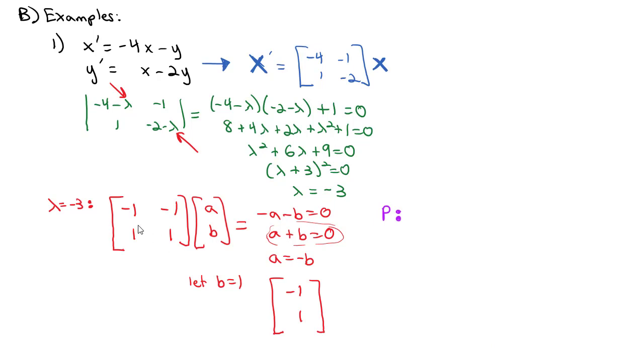Now we're going to look for our p vector. The way we find it is we take that same matrix, negative 1, negative 1, 1, 1, and multiply it by another vector. I'll call them m, n. That's my p vector. I'm going to set that equal to not 0, but equal to the eigenvector that I just found, negative 1, 1.